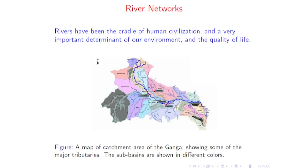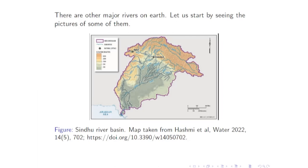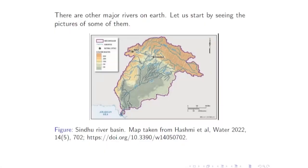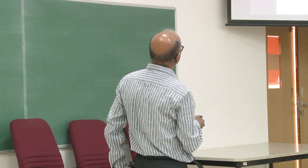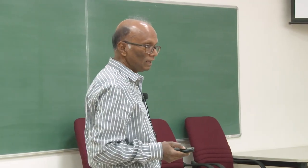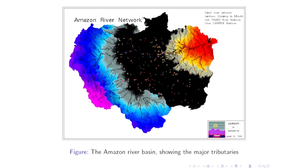There are other major rivers on Earth. This is the Sindhu River — its catchment basin contains most of Pakistan and a little bit of Kashmir and China. This is the Amazon River in South America — almost all of northern South America is the catchment of the Amazon, with one major river and many others joining into it. This is the Mississippi River — its catchment consists of almost all of the United States.